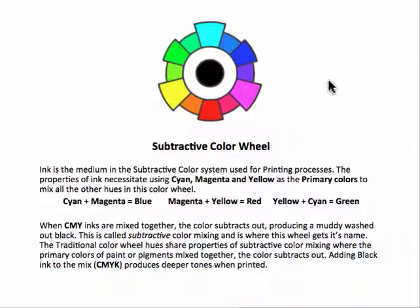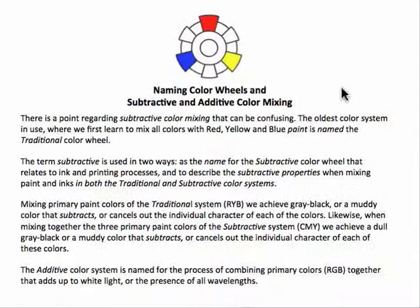We actually add black to produce the deeper tones when printing inks — that's why we have black ink. To print black using only cyan, magenta, and yellow would give a muddy, dull gray rather than high-contrast black, so we have to add black. The naming of the color wheels relates to subtractive and additive color mixing. The traditional color wheel comes from mixing paints, and the term subtractive applies to the subtractive printing processes, even though both traditional and subtractive systems produce a near-black when all primaries are mixed together.